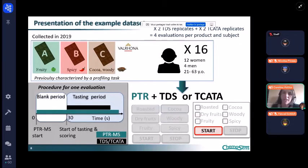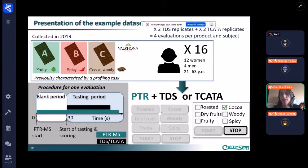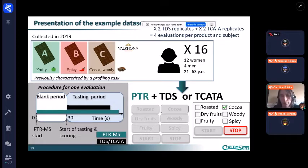TCATA is kind of the same thing but you can unclick the attribute. As an example here, I put the product in my mouth, I click on start, I feel some cocoa so I click it. I think, oh there is some woody too, so I can click on cocoa, but here as you can see I can click on both cocoa and woody, that is a thing that I couldn't do on the previous protocol. I feel some woody, I feel again some woody and cocoa, no I don't feel woody anymore so I unclick it, and finally I feel also cocoa again and then I don't feel anything so I click on stop.